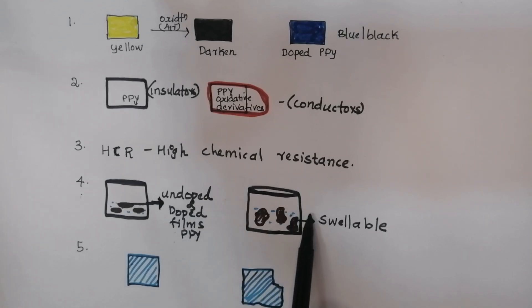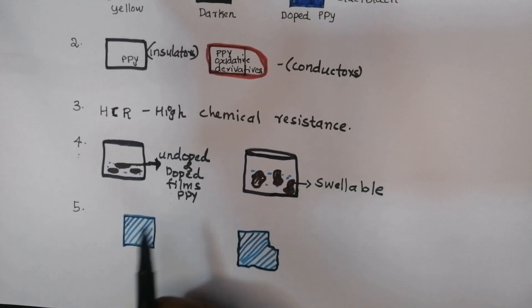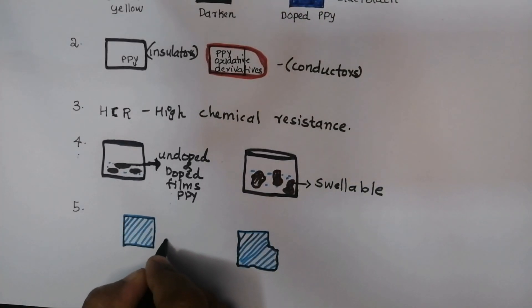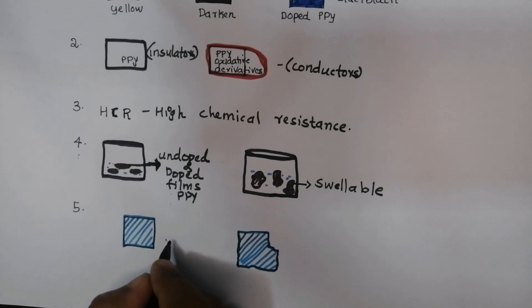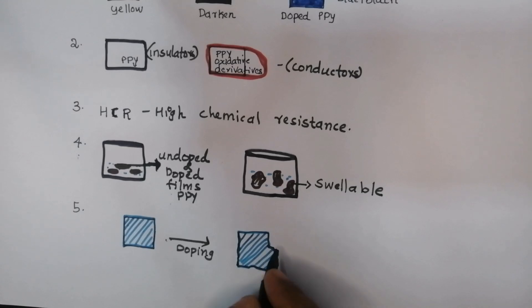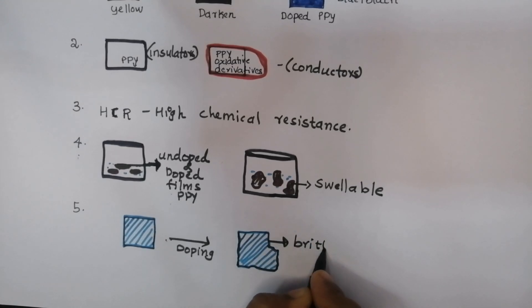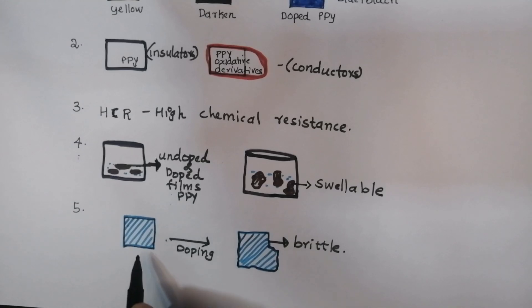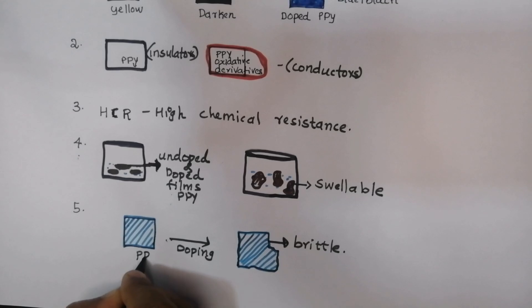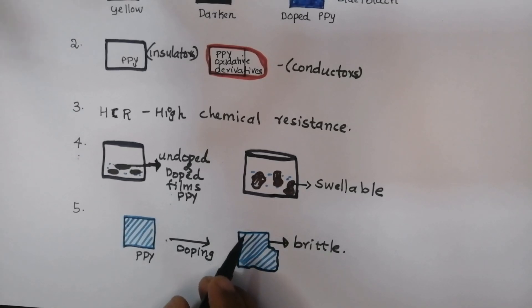The final property: doping of polypyrrole makes the material brittle. Doping of polypyrrole makes the material brittle.